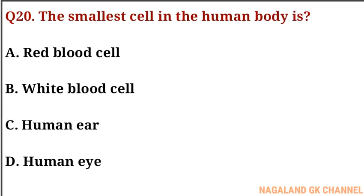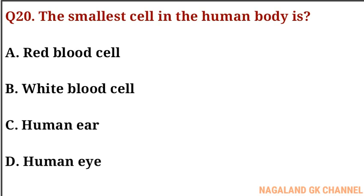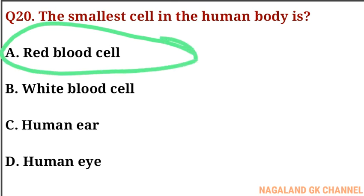Question number twenty, this is the last question: the smallest cell in the human body is what? The correct answer is option A, that is the red blood cell.